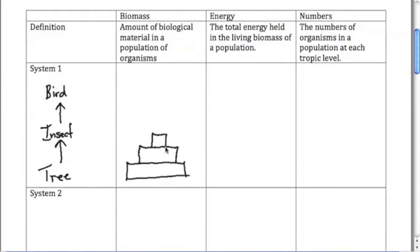If you take the birds living in that tree their biomass should be less than the overall insects. Now with the energy I'm going to draw this a little bit more specifically because there's a special way we should talk about the energy flow.